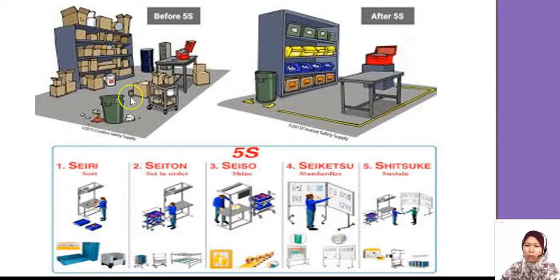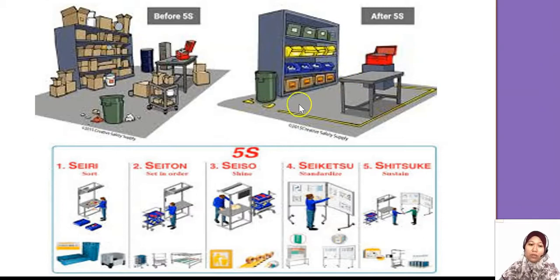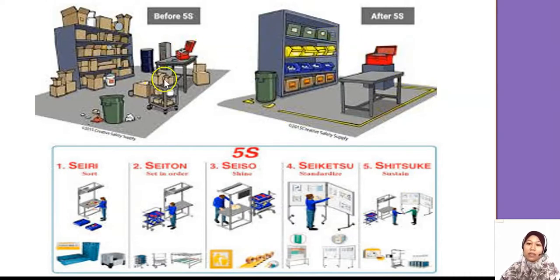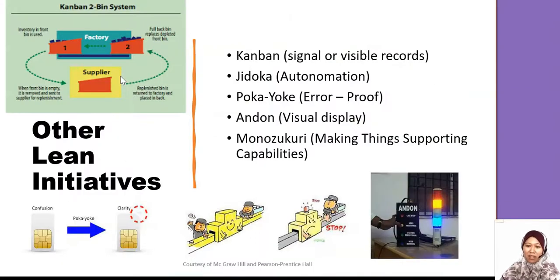This is what it looks like before 5S — messy and scattered. After implementing 5S: first you sort, then you set in order, then you shine (Seiso in Japanese), then Shiketsu — standardized, and finally Shitsuke — sustain. When you have tidied everything up once, keep it that way, forever. Don't be neat this week and messy again next week — that's not a sustainable 5S.